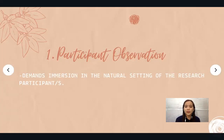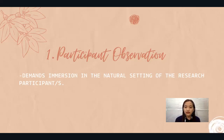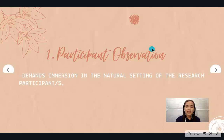The first kind is participant observation, which demands immersion in the natural setting of the research participants. As the researcher, you have to immerse yourself with the respondents in their natural setting. If your respondents are in school, you have to go there and conduct your study there, because you cannot know their behavior and the way they react to things if they're not in their comfortable place.